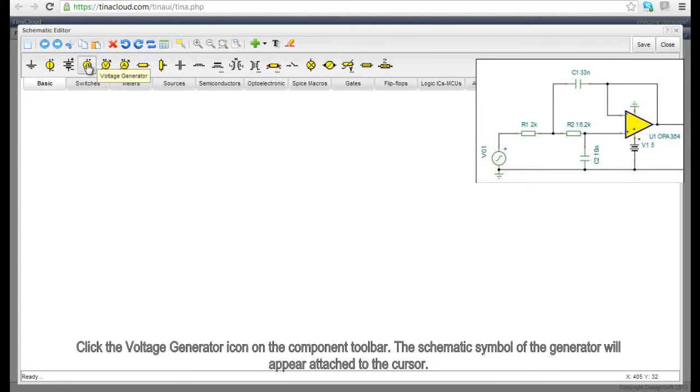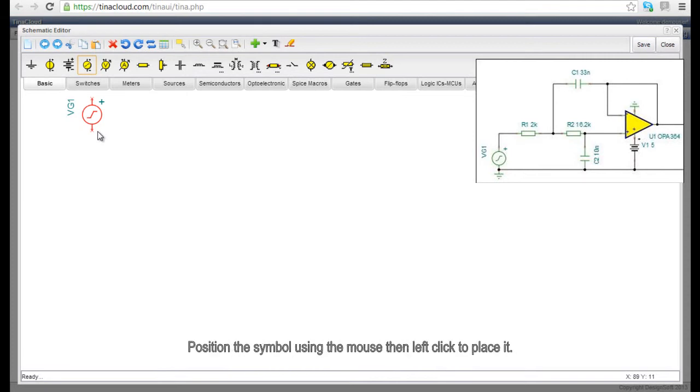Click the voltage generator icon on the component toolbar. The schematic symbol of the generator will appear attached to the cursor. Position the symbol using the mouse, then left-click to place it.